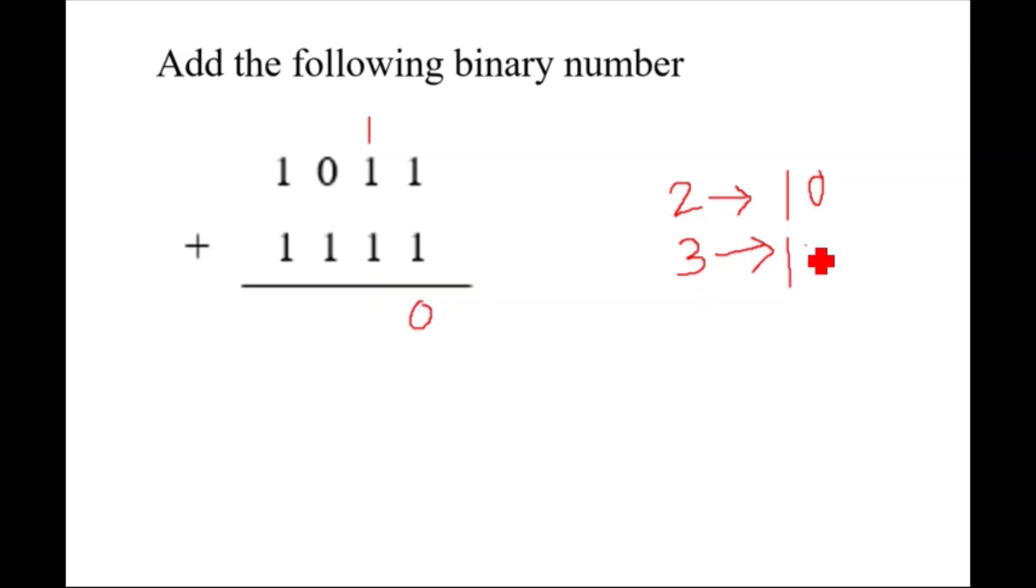Now this 1 and 1 will make 2, so here 0 will come and 1 will go as carry. Now this 1, 1, and this one will make 3, so you can write 3 like this. So this is how we can do binary addition.